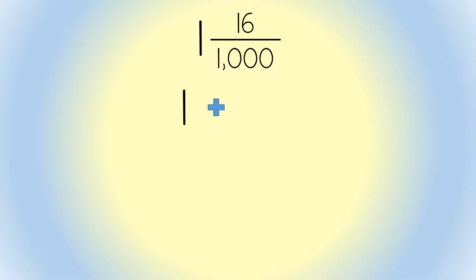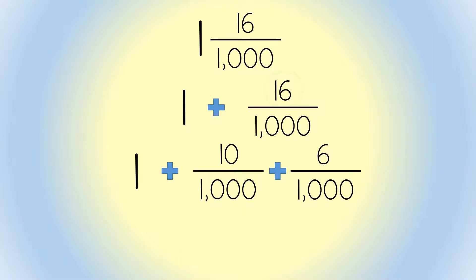1 plus 16 thousandths. Focusing in on 16 thousandths: 1 plus 10 thousandths and 6 thousandths. Here, 16 was expanded to 10 and 6, both still written over the denominator of 1,000.